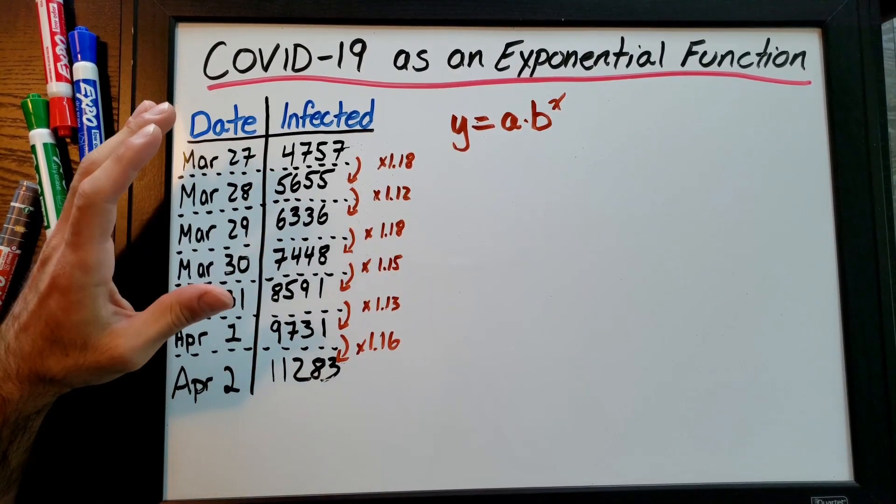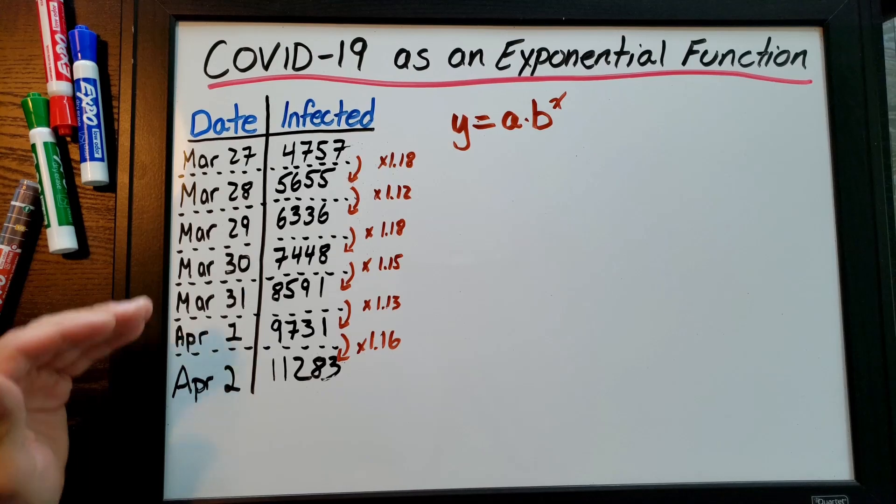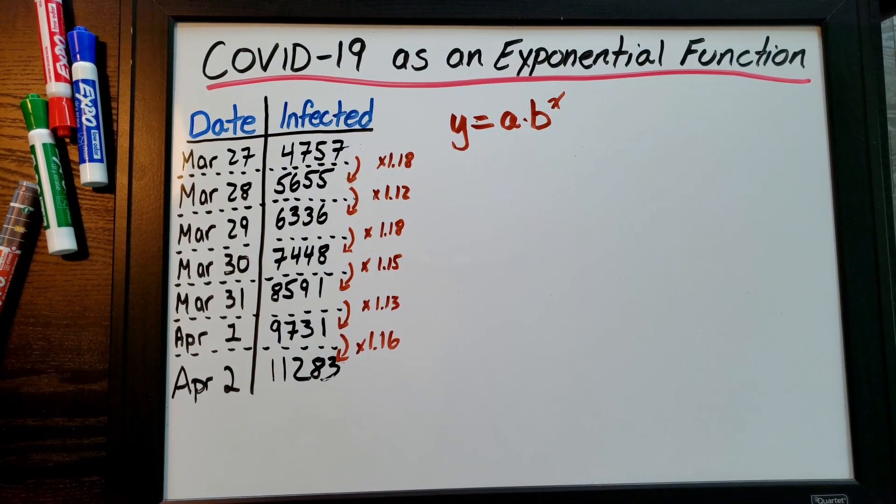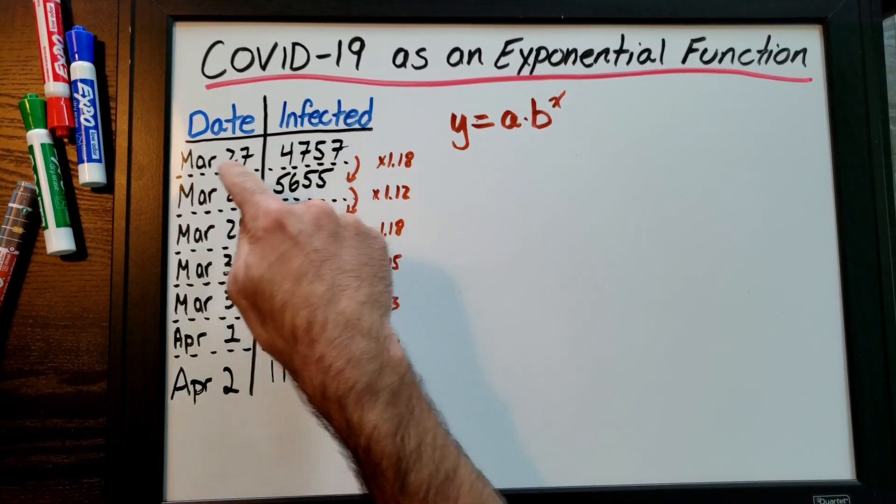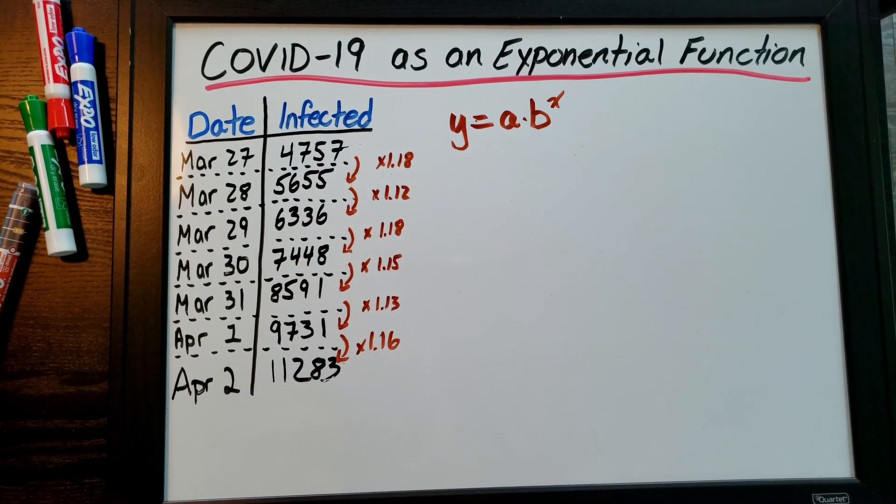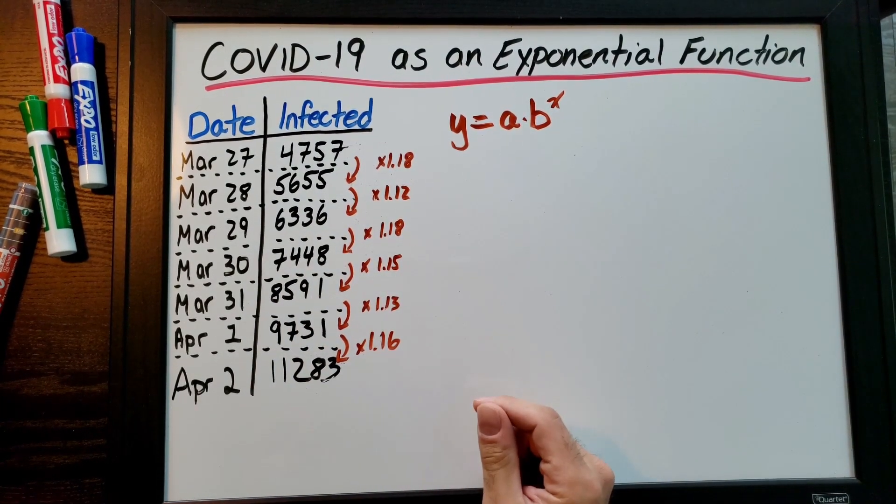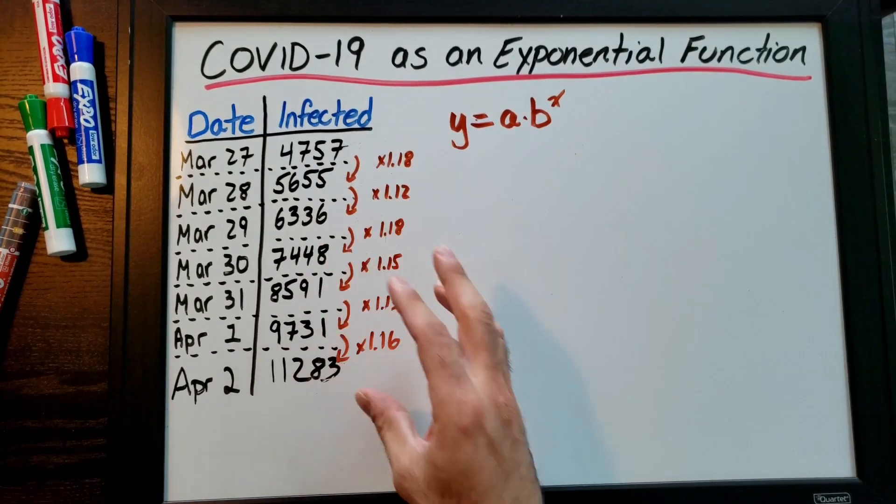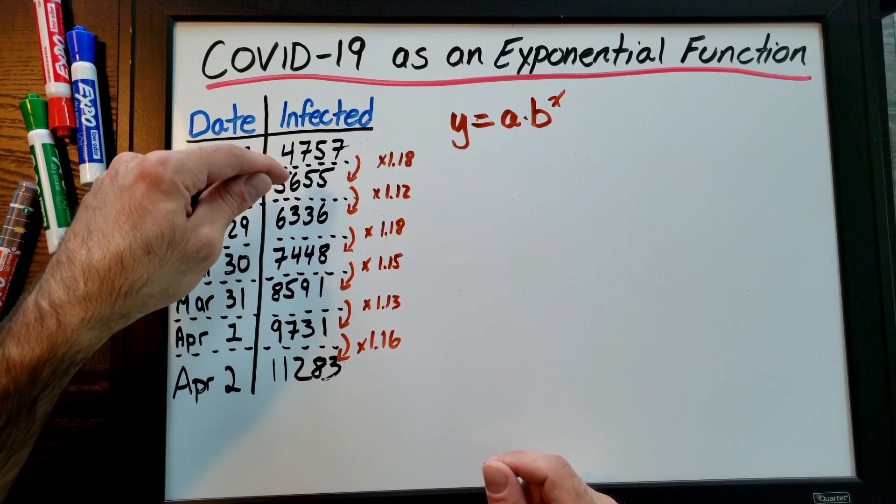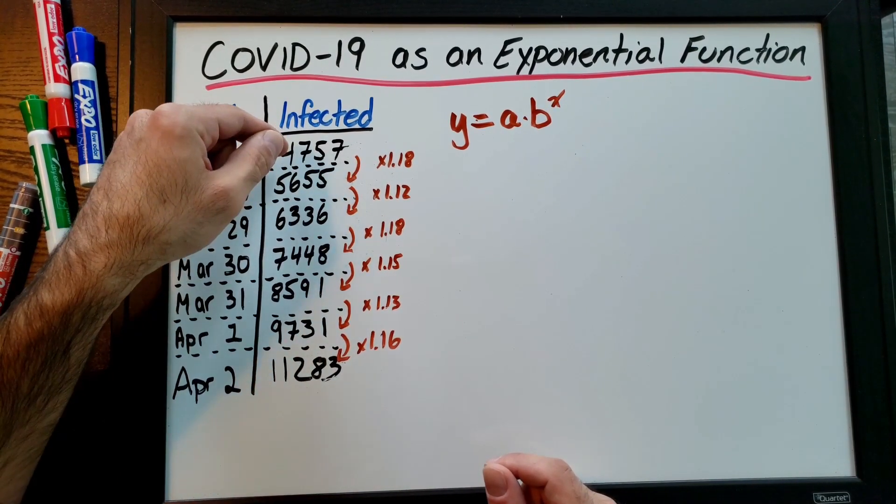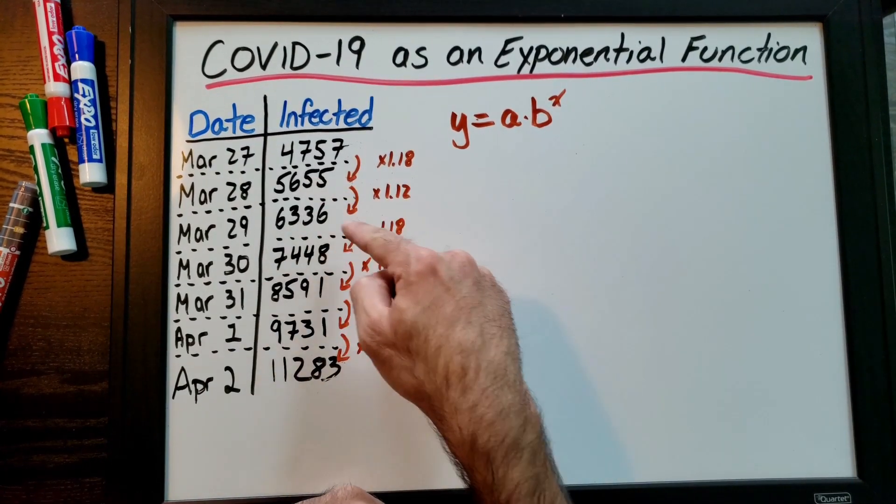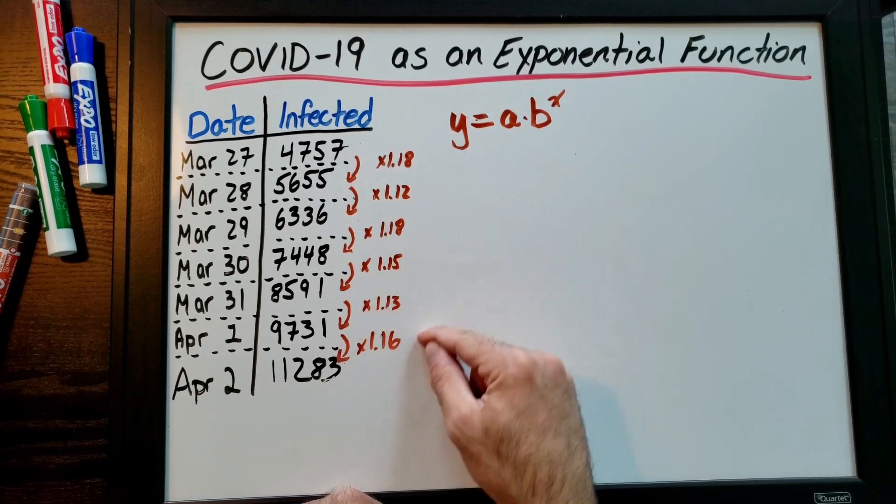So right here I have several dates and this is the infected in Canada. These numbers are actual data from the government's website. I'm looking at March 27, 28, 29 and putting how many people were infected. To find the actual growth, because this is exponential growth, I'm going to divide these numbers. What do I have to multiply to get from 4,757 to 5,655? I've got to multiply by 1.18, so I did this for every single number here.